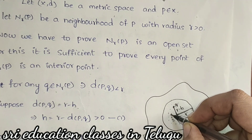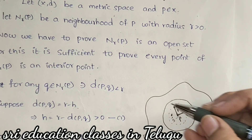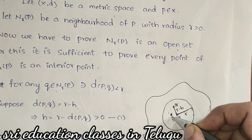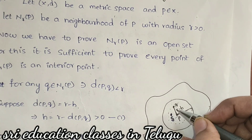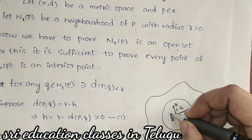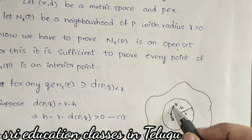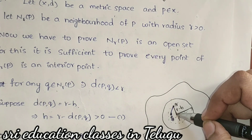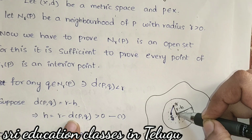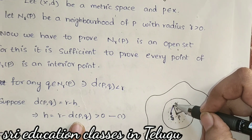Suppose a point is here. If we have the distance between d and d, we have distance between h. We have the distance between p and q, and then we have the distance between p and q.